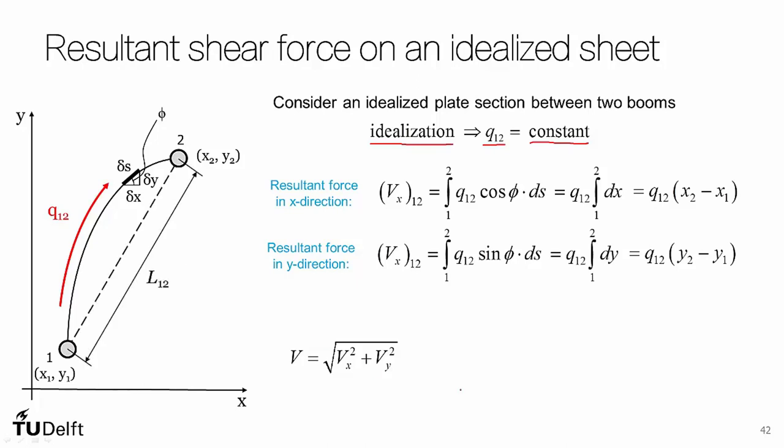Combining these results: the x component of the shear force is the shear flow times the change in x coordinate from 1 to 2, the y component is the shear flow times the change in y coordinate, and the total resultant shear force is Q12 times the linear distance between booms 1 and 2.